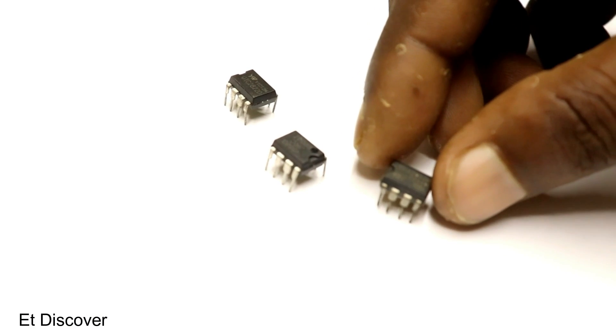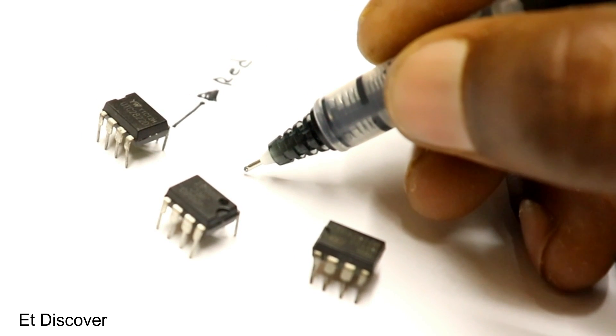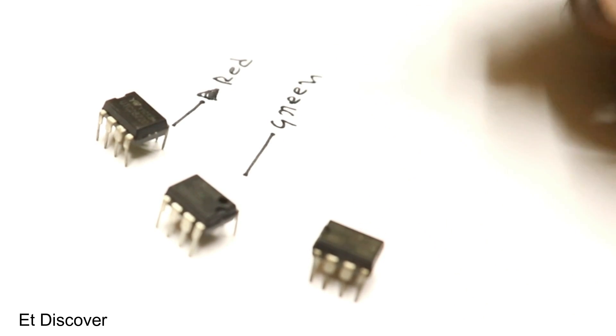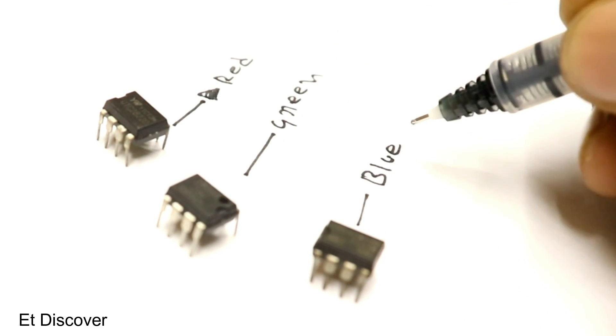I will use 3 ICs for 3 colors. I know it's crazy. In the analog process, you cannot mix RGB colors without using this method.